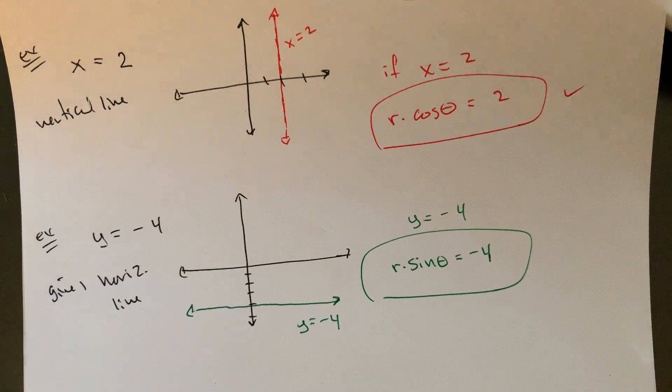You could sort of write equations for things that wouldn't come very naturally as x's and y's. So stuff like the circle.